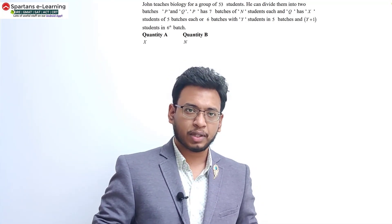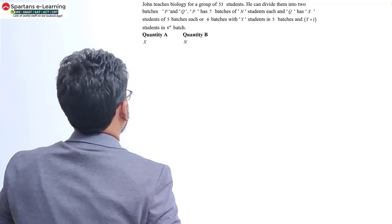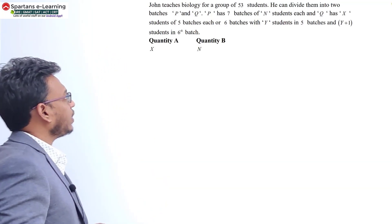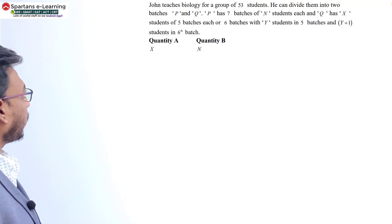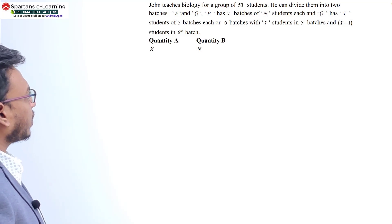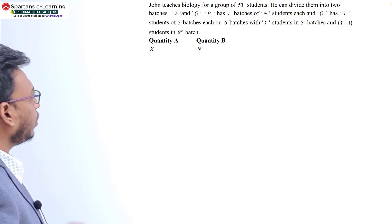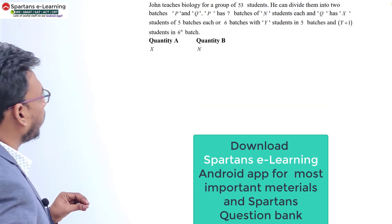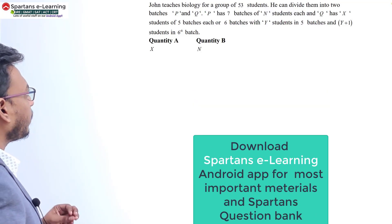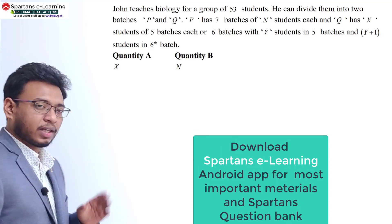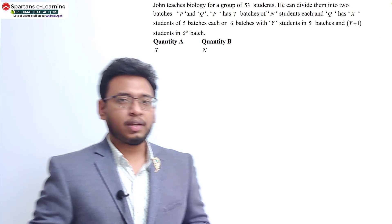This is our last question from simultaneous integral solutions. The question says John teaches biology for a group of 53 students. He can divide them into two batches P and Q. P has seven batches of N students each, and Q has X students of five batches each, or six batches of Y students in five batches and five students in the sixth batch. Quantity A asks about X, and Quantity B asks about N.